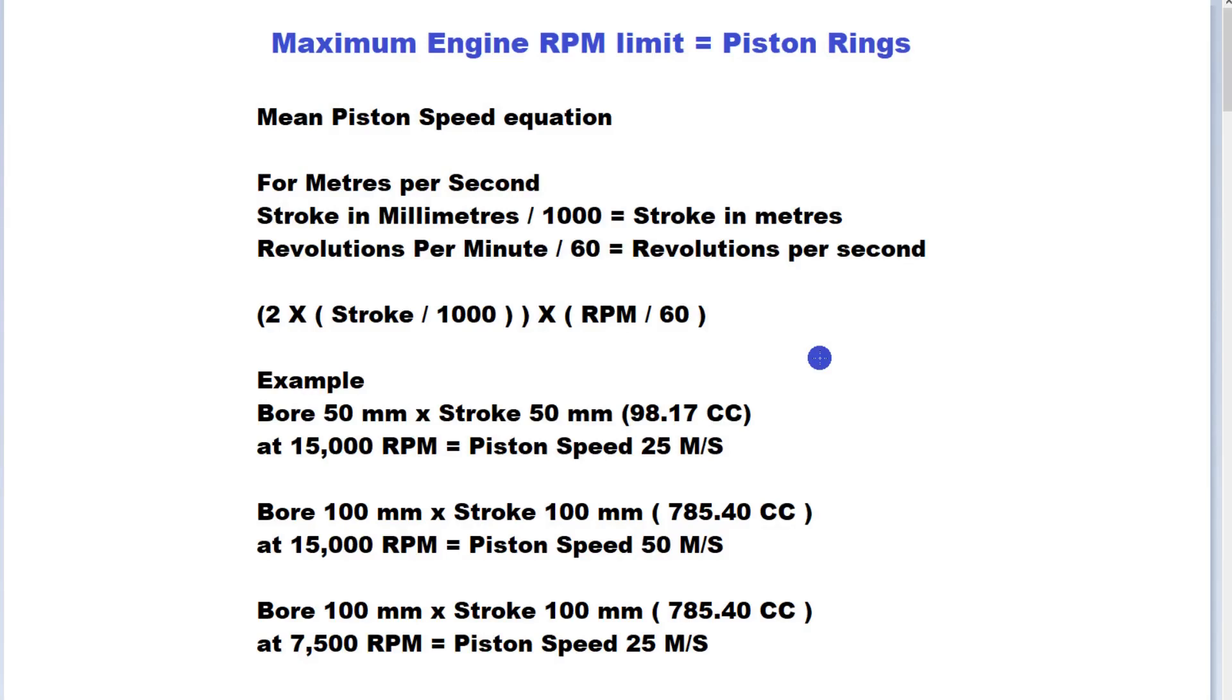This is a question that you may have posed or may not have posed before, but has been mentioned in videos on YouTube. The question is: what is the maximum engine RPM limitation? What is the thing that stops the engine revving any higher, or what determines the maximum RPM of any engine?